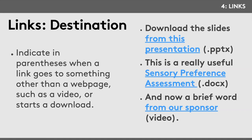If you're linking to something that is not a webpage — a PowerPoint, Word document, or video — people need to know that before clicking, because it may trigger an automatic download. That can be confusing to people with cognitive or intellectual disabilities and startling to people with anxiety or neurodivergent tendencies. At the end of the link, put the file type in parentheses: .pptx, .docx, .pdf, or just the word 'video.' No one wants to suddenly have a video start playing in another browser tab.